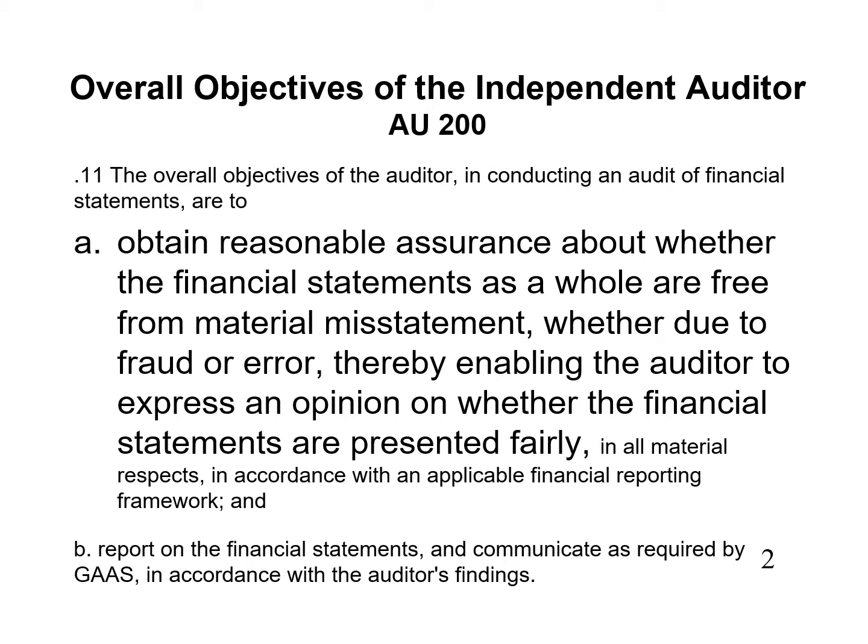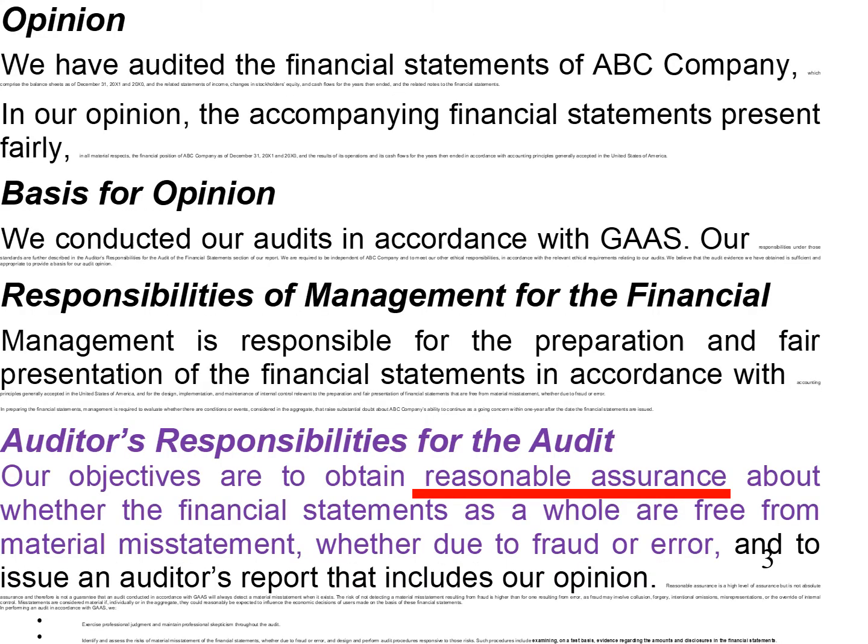Audit Objective 200: the overall objective of the Auditor is to obtain reasonable assurance about whether the financial statements as a whole are free of material misstatement, whether due to fraud or error, thereby enabling the Auditor to express an opinion on whether the financial statements are presented fairly. In the Auditor's Responsibilities section of the Standard Audit Report, our objectives are to obtain reasonable assurance about whether the financial statements as a whole are free from material misstatement, whether due to fraud or error, and to issue an Auditor's Report that includes our opinion.